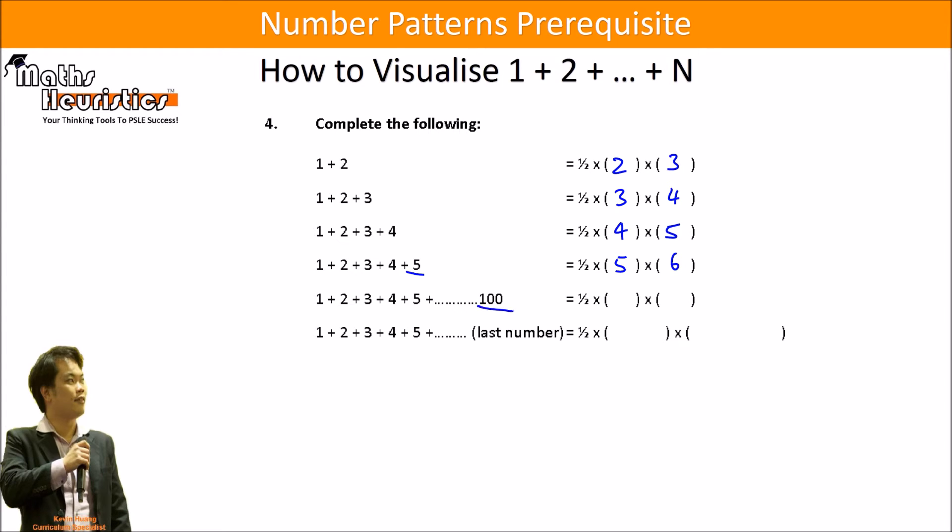So even if I blow this up all the way until 100, the pattern should be the last number comes here. So 100 will come here. This would be one more than that. So if I have 1 plus 2 plus 3 plus 4 plus 5 all the way up to the last number, this will be half times the last number times that last number plus 1.